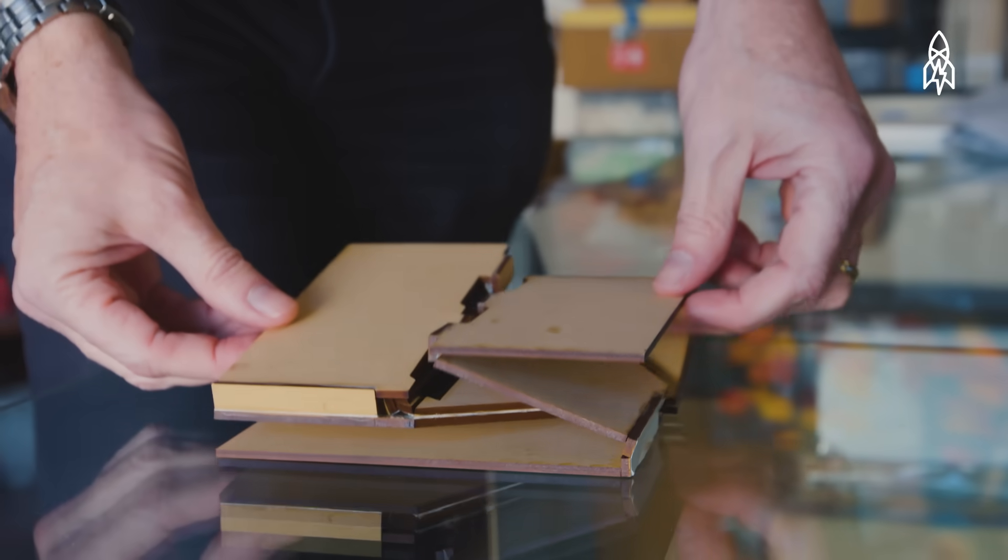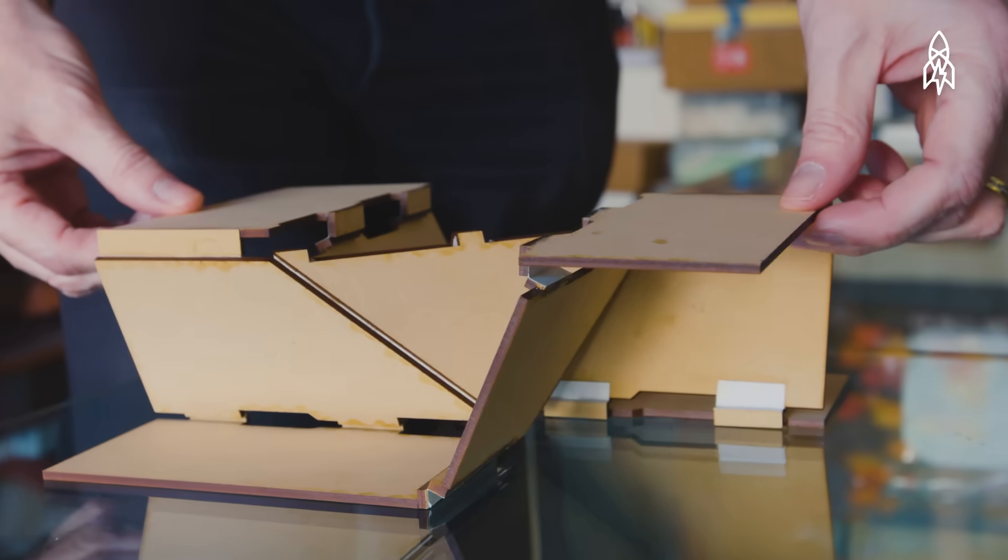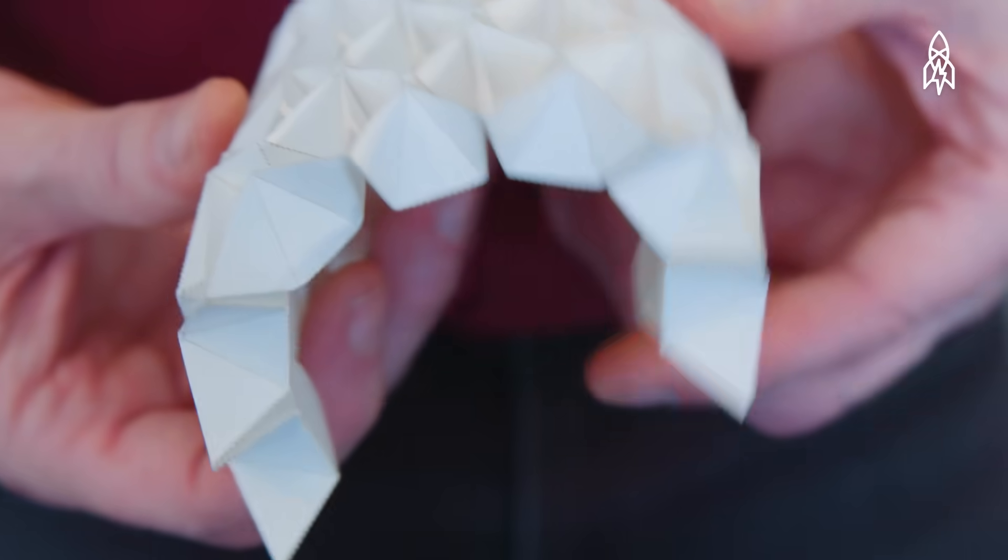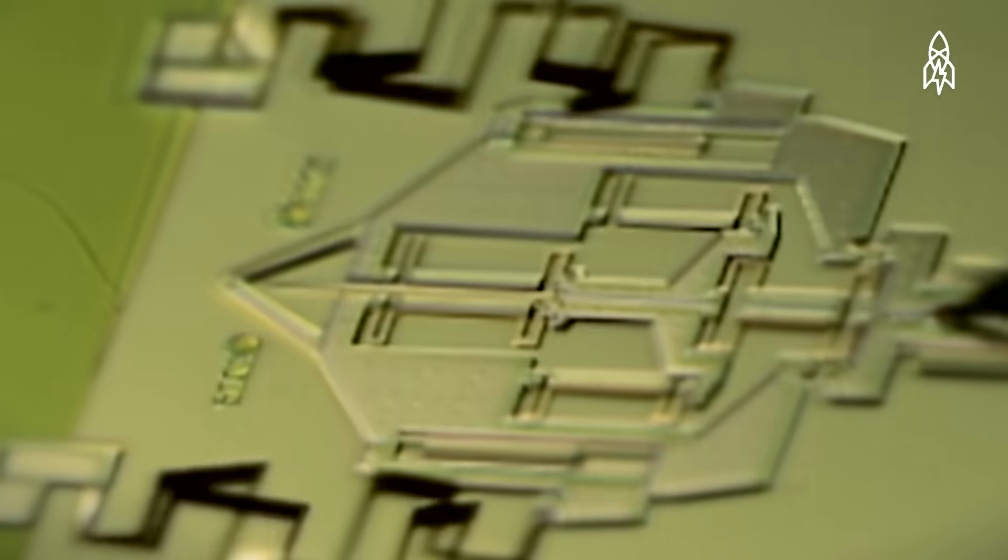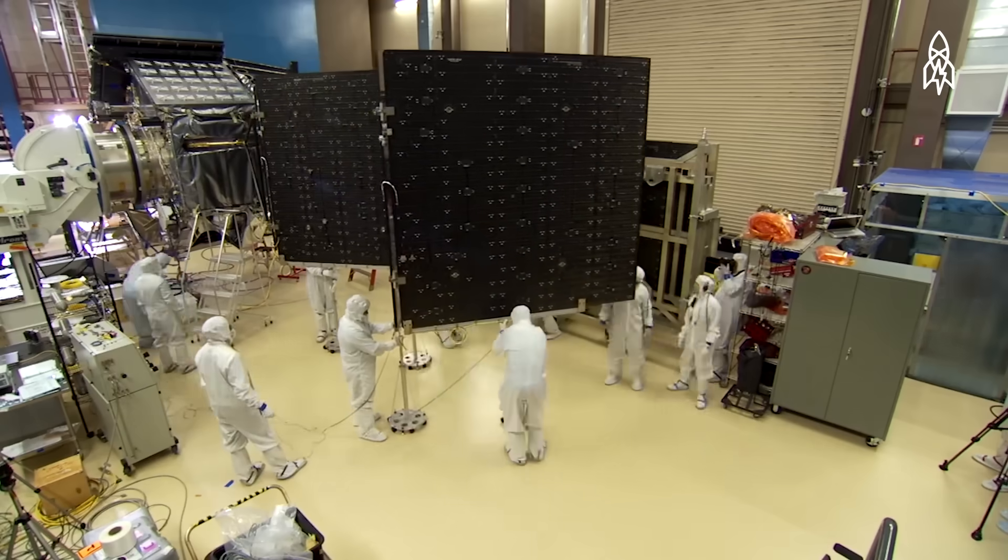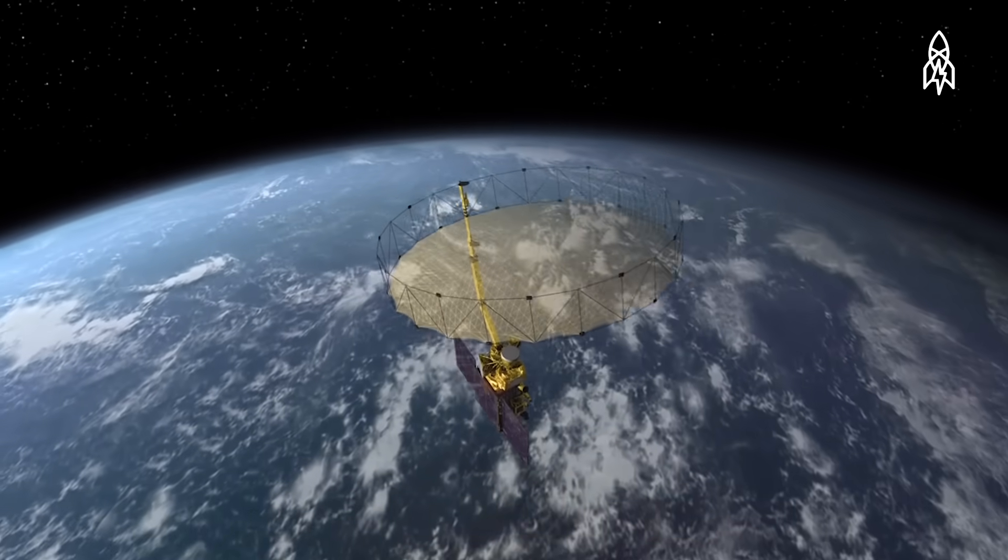One of the most important attributes of origami is once we have studied and understood the way paper folds and unfolds, we can apply those patterns to things that are very different from paper.